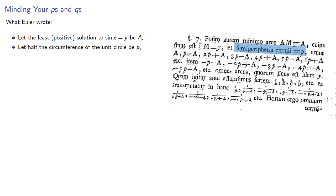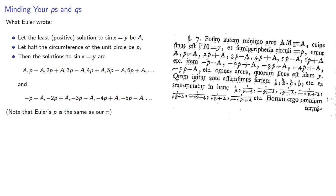Let half the circumference of the unit circle be p. Then the solutions to sine x equal to y are... And note that Euler's p is the same as pi. In other words, here are the positive and negative solutions to sine x equal to y.